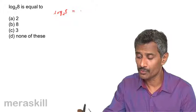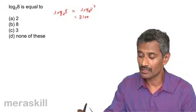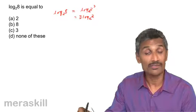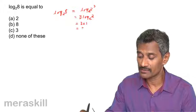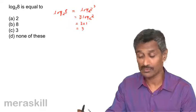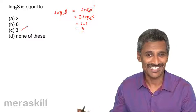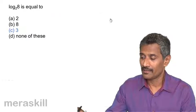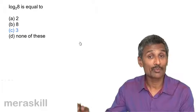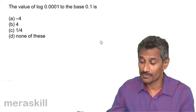Now 8 is a power of 2, so we write this as log 2³ to the base 2, which is the same as 3 log 2 to the base 2, which is nothing but 3 into 1, that is 3. So log 2 to the base 2 is 1, giving us the answer 3.